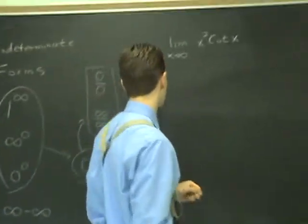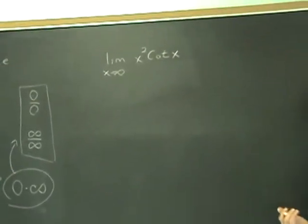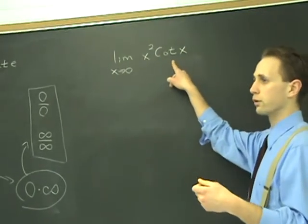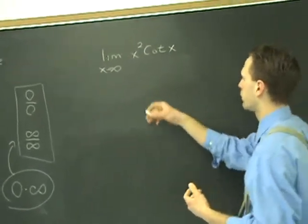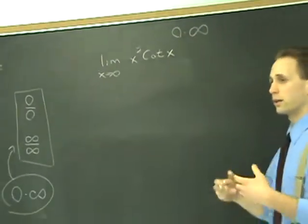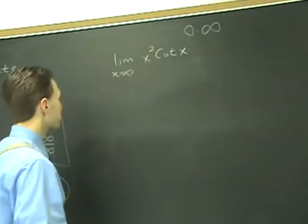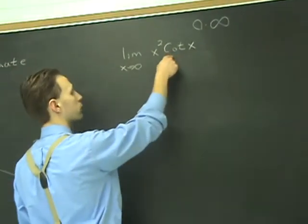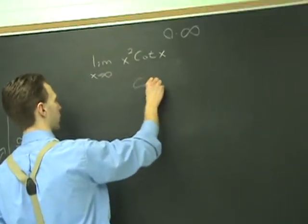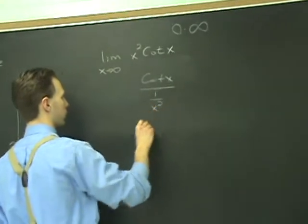For example here, limit as x goes to zero of x² cot(x). You try to plug in zero, you get zero times, well the tan of zero is zero, so the cot of zero is infinity. So this is of type zero times infinity. How do you handle that? You can't apply the rule directly, so you have to do a trick. What you do is you just rewrite this as a division problem.